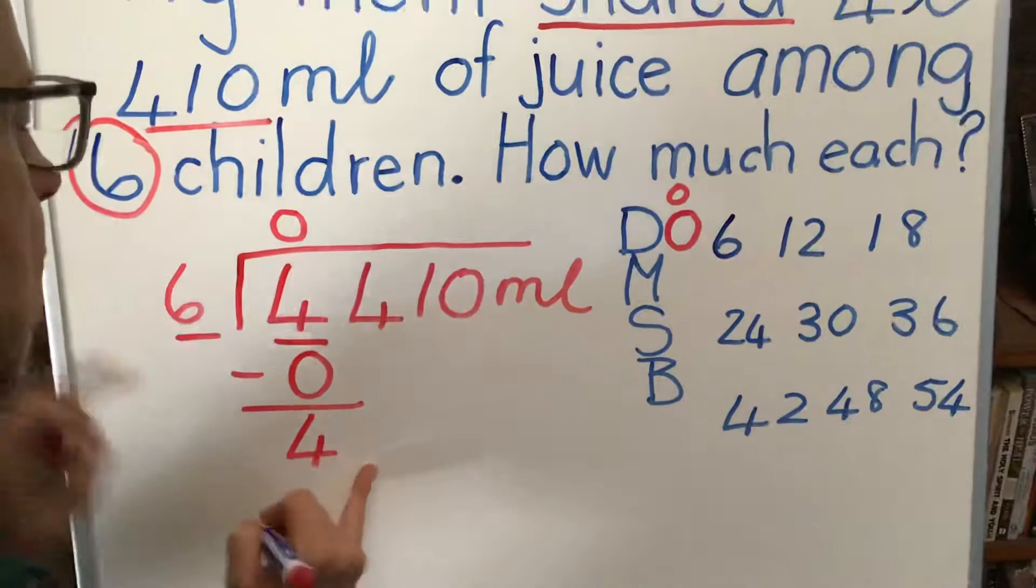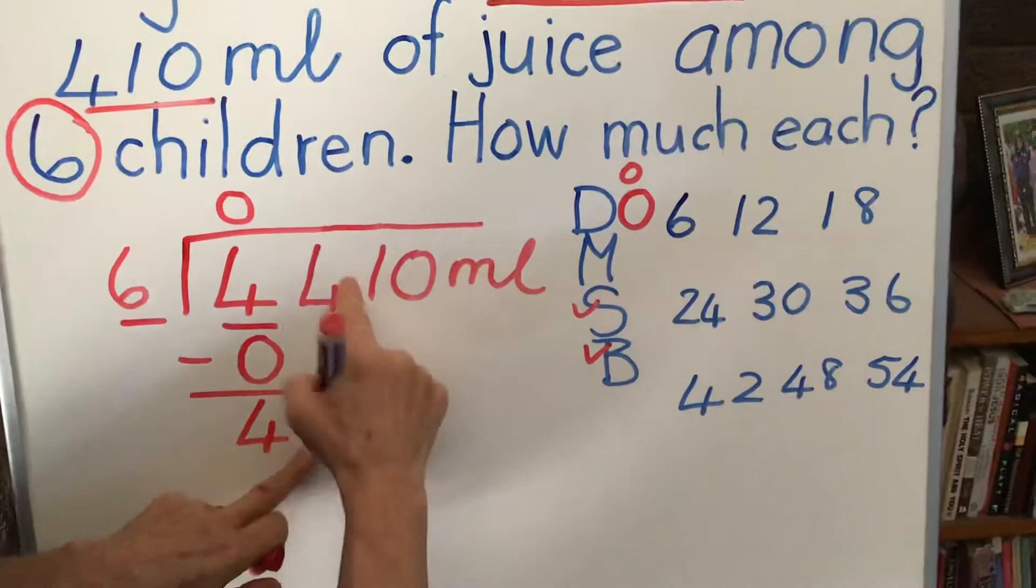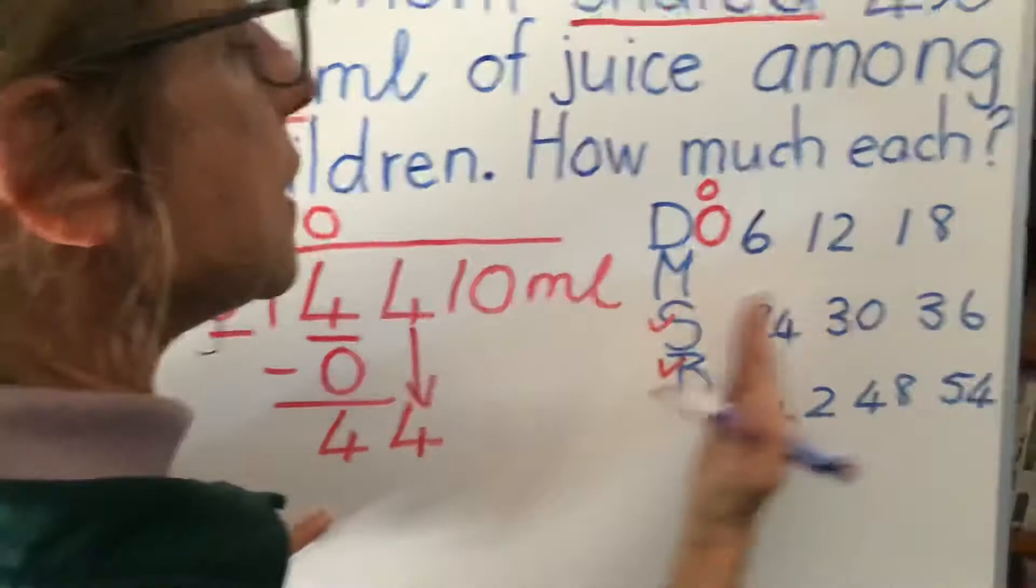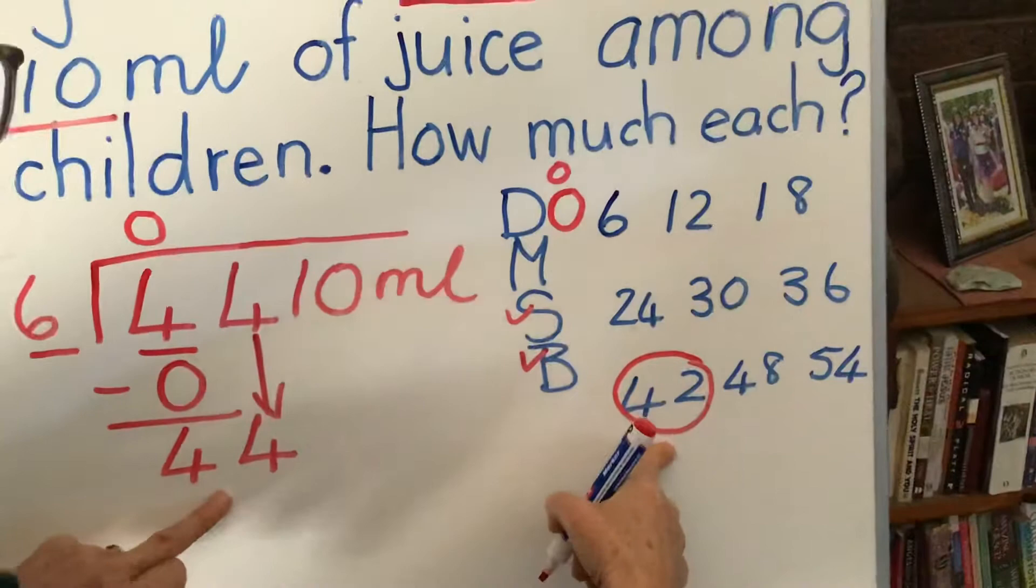Then what we do after subtract, we have to bring down. 4 goes into that position there. Let's look for the number 44. Can we find it in our multiples? We can find 42. That is the closest and the best one that we're going to use.